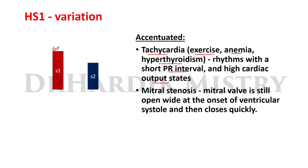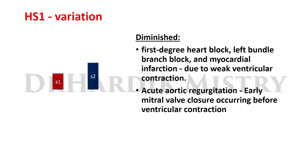S1 is accentuated in conditions of tachycardia occurring during exercise, anemia, or hyperthyroidism; in rhythms with short PR interval; and in high cardiac output states. The second condition is mitral stenosis — the mitral valve is still open wide at the onset of ventricular systole and then closes quickly, causing heart sound one to be louder than heart sound two. This abnormal condition is known as accentuated HS1.